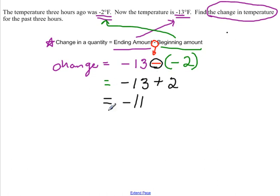And then if we want to make sure that makes sense to us, let's think about a thermometer. If we consider that I've got a thermometer, and if I started at negative 2 - so here was negative 2 - and now it's down to negative 13